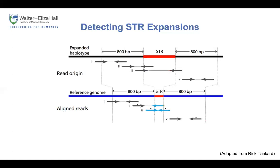Another possibility is a read that aligns to the reference, but when you compare the insert size in the reference genome to the individual with the expansion, you get a very different insert size. Another case is a read that lies entirely within the STR, giving excess STR motif that doesn't align well and would be clipped. Finally, if both reads lie entirely within the STR, the read will probably not align to the reference at all.